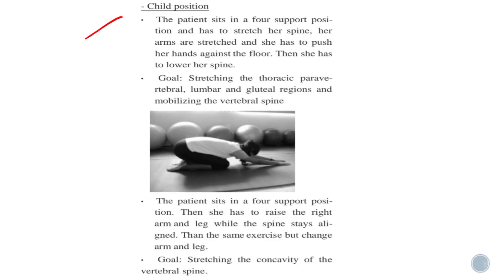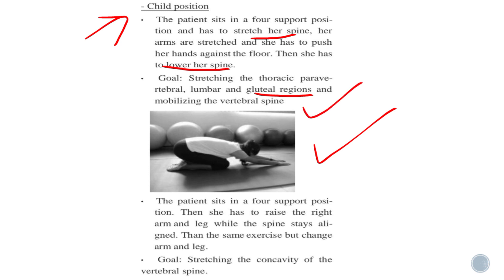Child position is also performed for scoliosis. The patient is in a four-point position, arms stretched, pushing hands against the floor, then lowers the spine. The goal is to stretch the thoracic para-vertebral, lumbar, and gluteal region muscles and mobilize the vertebral spine.